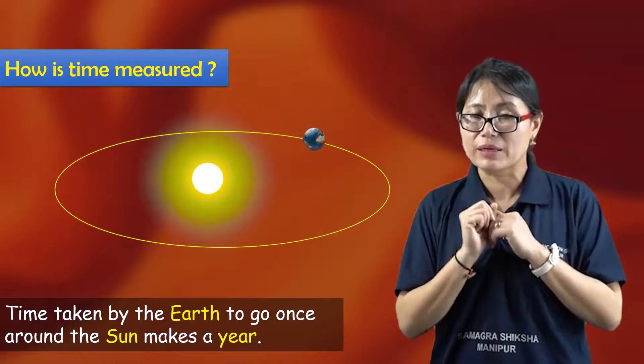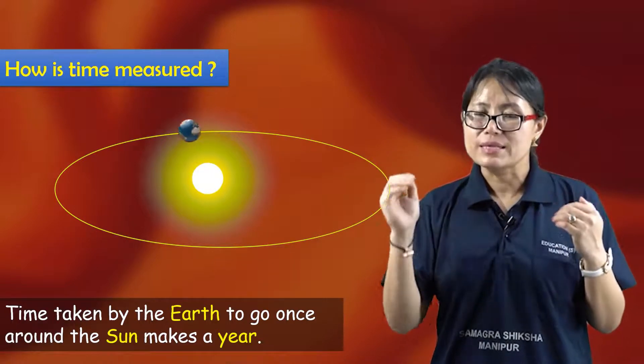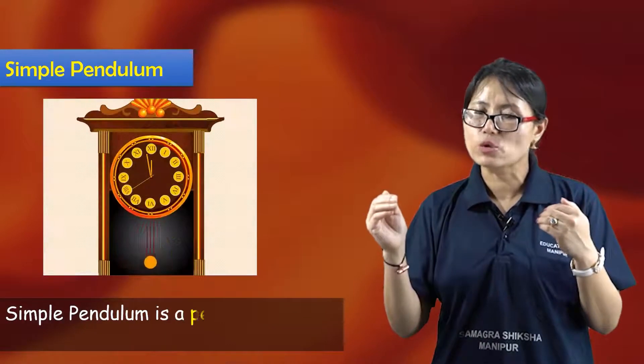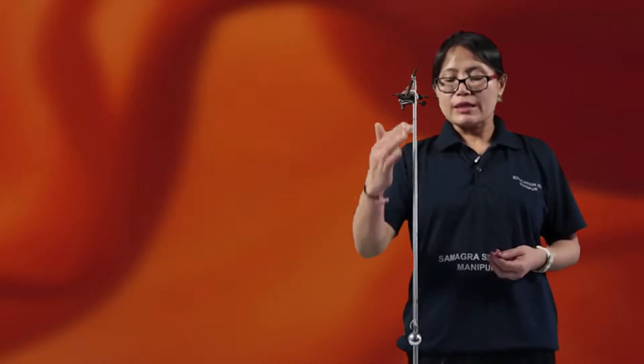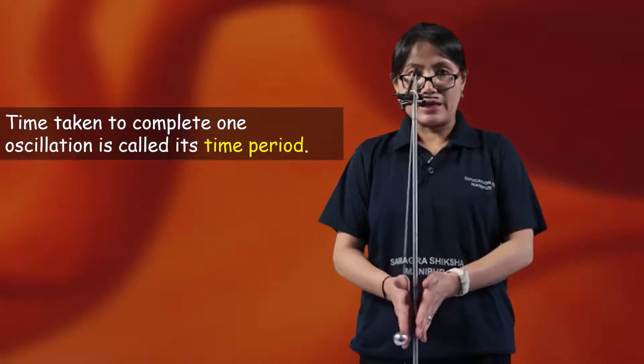We have an activity using a simple pendulum. A simple pendulum has a metallic ball or bob attached to a thread. If you have a clock at home, you can see this. When the bob moves from its main position to the right or left and back, that is oscillatory motion. One complete movement from extreme position to the other extreme and back to the starting position is called one oscillation.